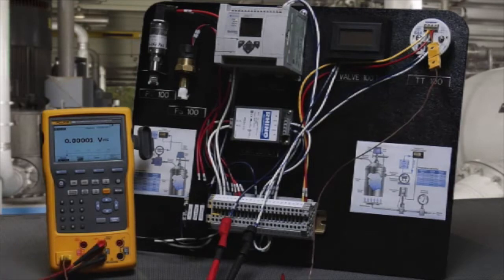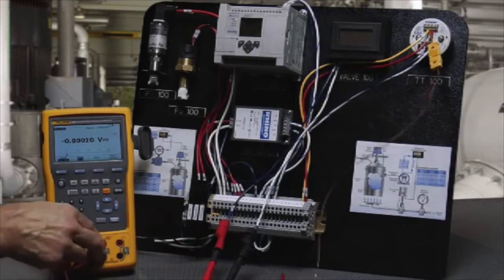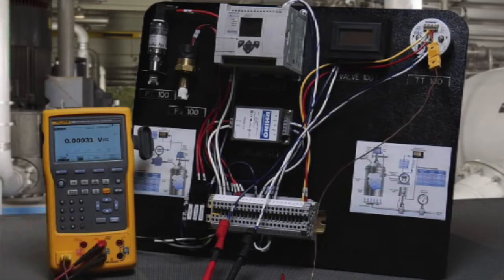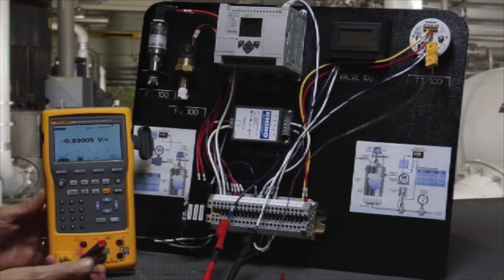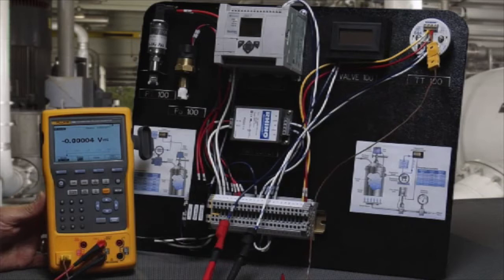We're going to measure the milliamp signal of the transmitter on the input of the 754 and power it with a 24-volt power supply internal. We're going to source or simulate a temperature signal to the input of the transmitter while simultaneously measuring the milliamp output and calculating error percent of span.